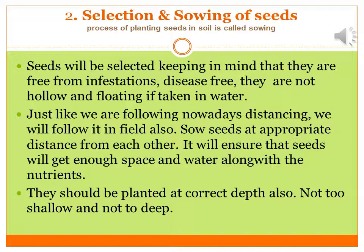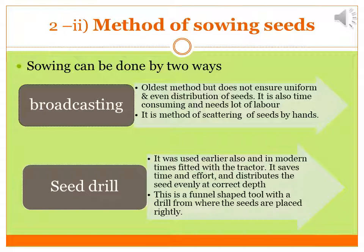The method of sowing seeds can be traditional or modern. In India, traditional methods like broadcasting are still prevalent. The problem with broadcasting is that distribution of seeds is not even, it takes a lot of labour, and it is very time consuming since we scatter seeds by hand. The modern option is using a seed drill — a funnel-like system fitted on a tractor — which saves time, saves effort, and very importantly sows seeds at the correct depth.